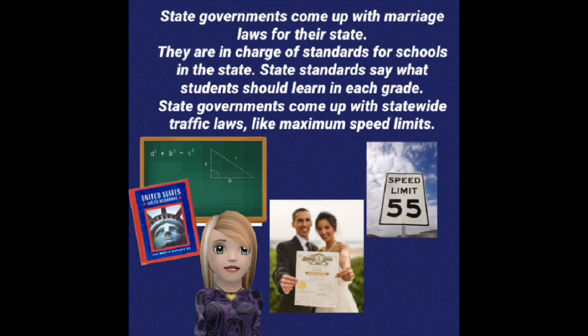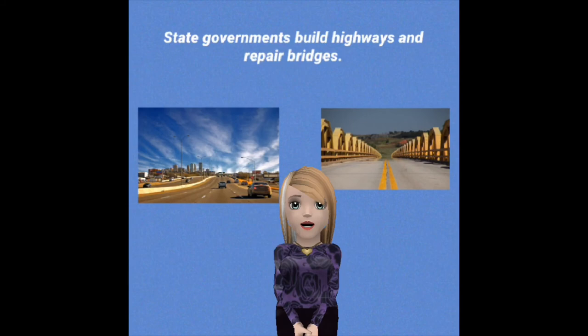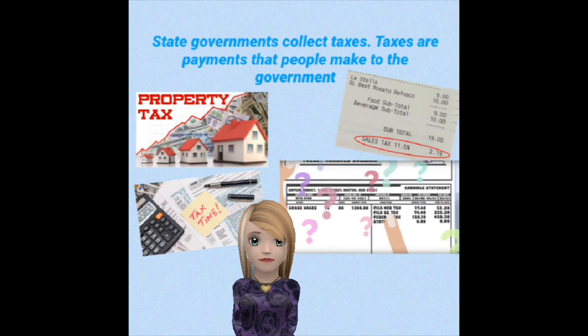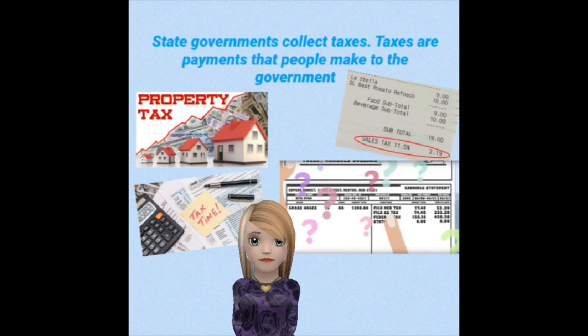State governments come up with marriage laws for their state. They are also in charge of standards for schools in the state. State standards say what students should learn in each grade. State governments come up with statewide traffic laws like maximum speed limits, build highways, repair bridges, and give out driver's licenses. State governments also collect taxes, which are payments that people make to the government, providing government funding. They also create state parks.